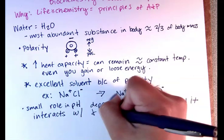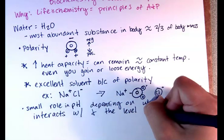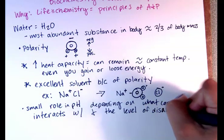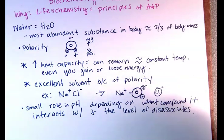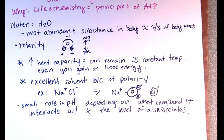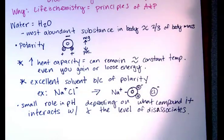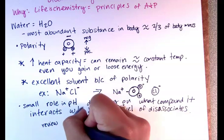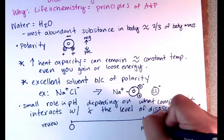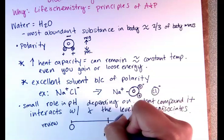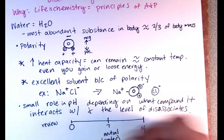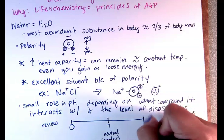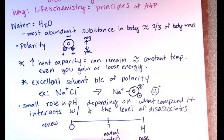The impact on pH depends on the level that water can dissociate a substance. For example, if you have hydrochloric acid and water, it's going to dissociate that acid a lot, so your pH will become very acidic. With weaker acids, water is not going to dissociate it as much so it won't have as much of an impact. Just a quick review: the pH scale goes from 0 to 14, with 7 as neutral — like water. Closer to 14 is a base, and closer to 0 is an acid.